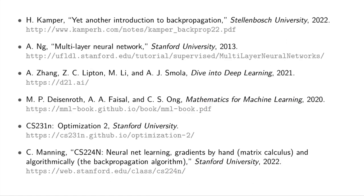Then there's the book 'Mathematics for Machine Learning,' which is quite intense. But I really like it because it builds things from basically scratch and it's intuitive — it's not like a hardcore mathematics textbook, though it is much more rigorous than some of the other resources here. Where I found this book really helpful is in understanding matrix and vector calculus, and I think it does a really, really good job of that.